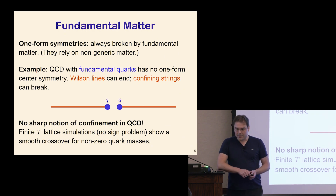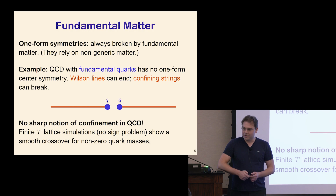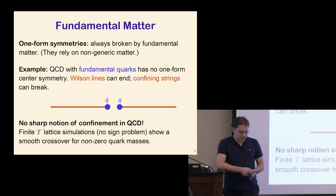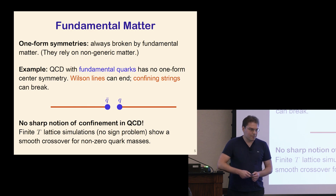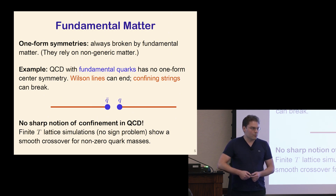When people talk about trying to prove confinement in QCD in some rigorous sense, they need to confront this problem. This feature is not just empty words: if you study QCD with fundamental massive quarks at finite temperature, it actually does not have a sharp finite temperature phase transition unlike pure gauge theory. This can be studied beautifully on the lattice, which shows a smooth crossover.